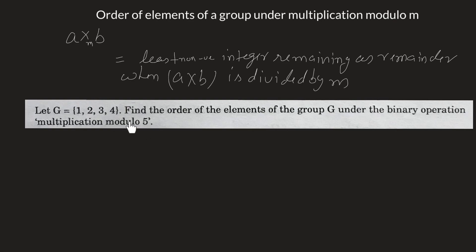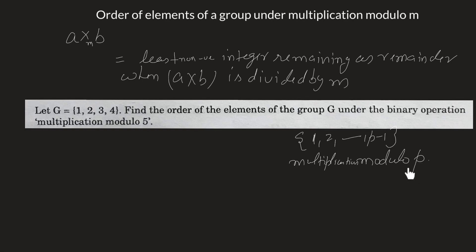Since we know this is a group: when 5 is a prime number P, we have elements from 1 to P minus 1 forming a group under multiplication modulo P, where P must be a prime number. If it is not a prime number, this will not form a group. So 1, 2, up to P minus 1 will form a group under multiplication modulo P. This could also be asked in an examination — prove that this forms a group under multiplication modulo 5, which we will do in the next video lecture.